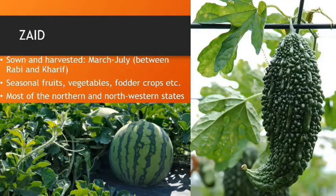Then comes the Zaid crop, sown and harvested in the months of March, April, May, June, and July — the time between Rabi and Kharif crops. Seasonal fruits, vegetables, and fodder crops are grown in this season. It is grown in most of the northern and north-western states.